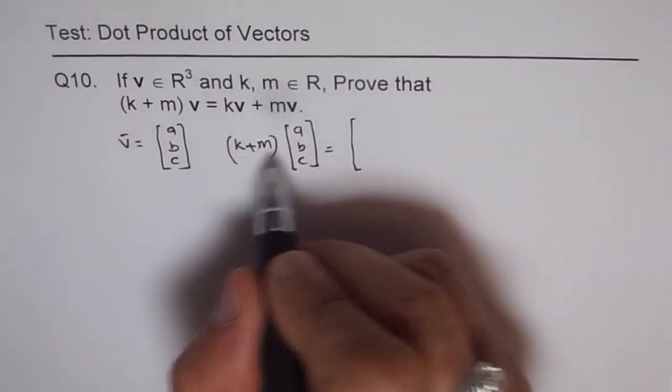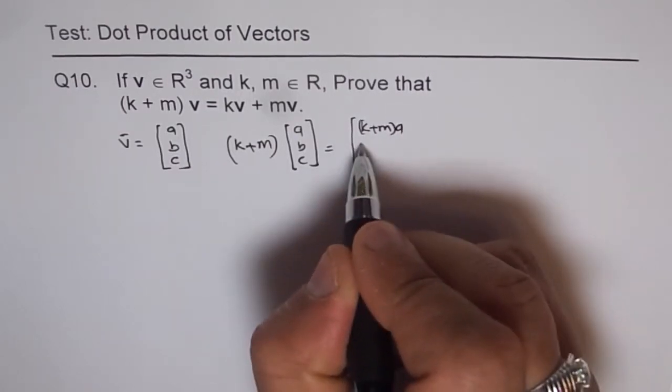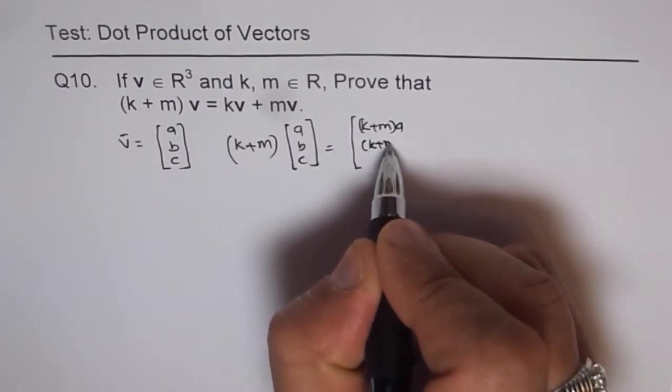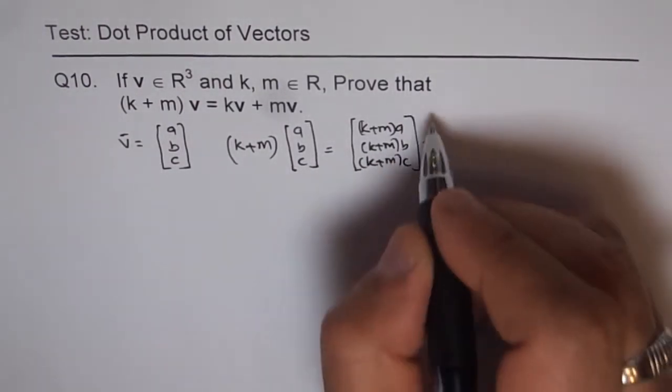You will get (k+m)a, and then you get (k+m)b, and (k+m)c. Which is basically (k+m) times each component.